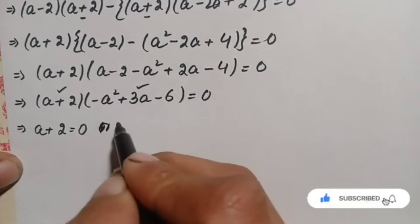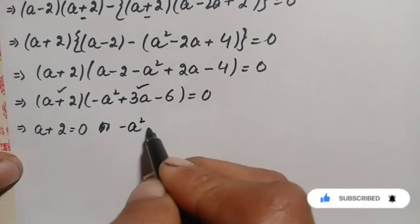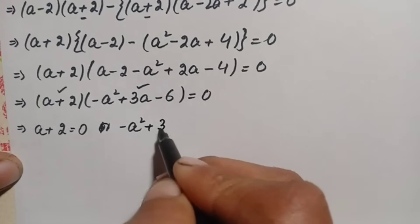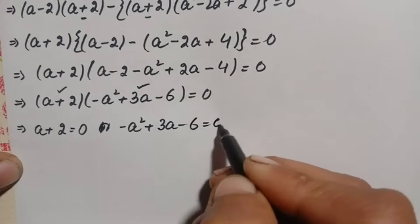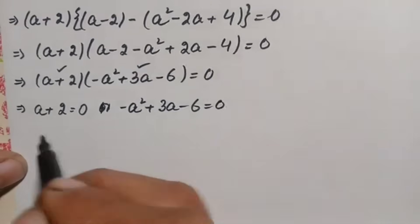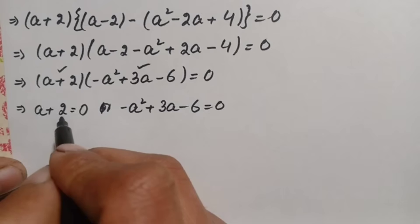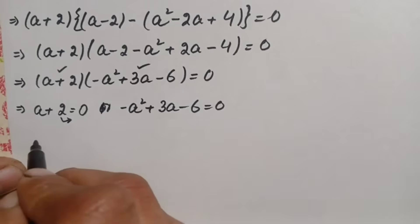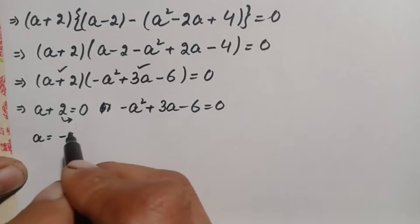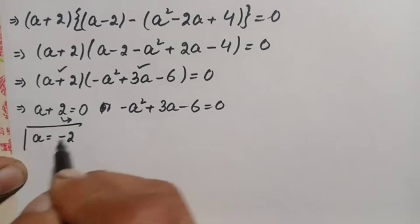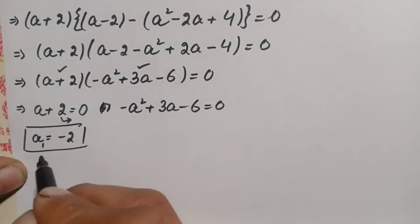From the first equation, a plus 2 equals zero, we move 2 to the right hand side to get a equals negative 2. This is our first real solution, a₁ equals negative 2.